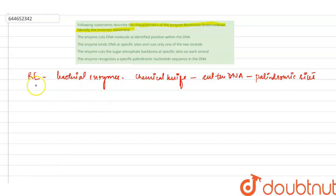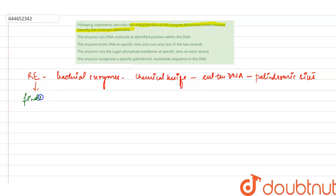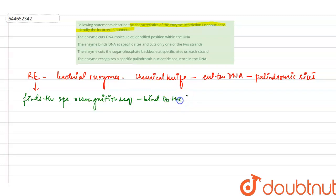What restriction endonuclease does is it inspects the whole length of the DNA sequence, then it finds the recognition sequence — the specific recognition sequence, also known as the palindromic sites. It will then bind to the DNA.